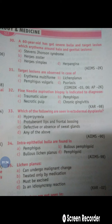Next question, number 32: Fine needle aspiration biopsy is indicated to diagnose which condition? The answer is option B, that is Pemphigus. You should keep in mind that in Pemphigus there is intraepithelial bulla formation — this is the key point. Whenever you are confused about whether it is Pemphigus or something else, you should do FNAC — fine needle aspiration cytology biopsy.